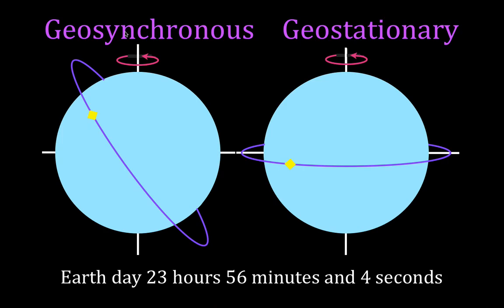There's a special kind of geosynchronous orbit, which is called geostationary. It's also geosynchronous — the orbital period of the satellite is equal to the rotational period of the Earth. But for geostationary, we have an orbit that goes right around the equator. This occurs only at the equator; this orbit is not inclined to the equator, it goes right above the equator.